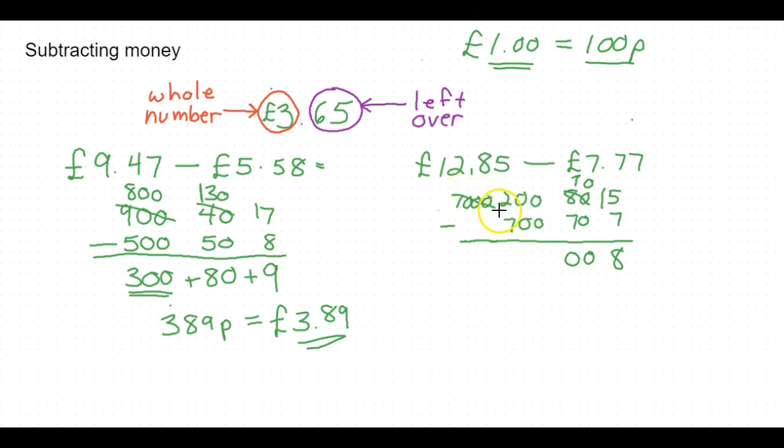200 subtract 700, we can't do that, so what we're going to do is cross this thousand out, and we're going to move the whole set of a thousand over to here. So this is now 1200 subtract 700, gives us 500.